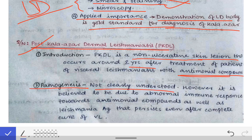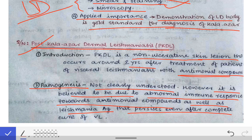The pathogenesis of PKDL is not clearly understood till date. However, it is believed to be due to an abnormal immune response towards the antimonial compounds like urea stibamine, as well as towards leishmania antigens that persist even after complete cure of visceral leishmaniasis.